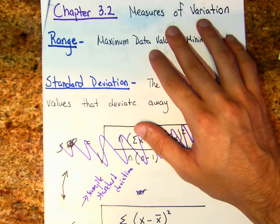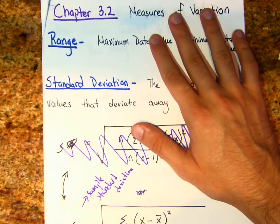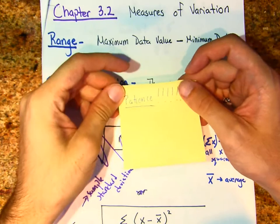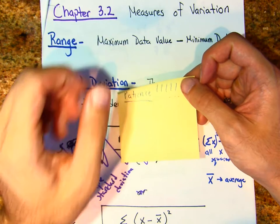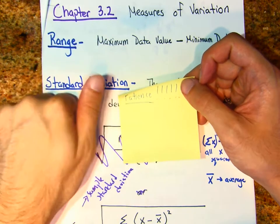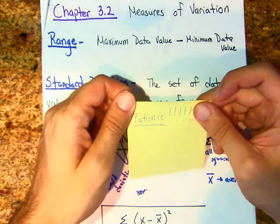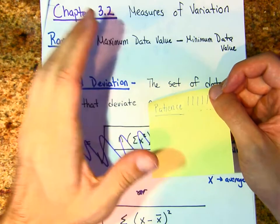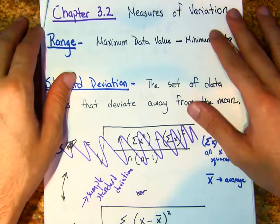Welcome everybody — 3.2 Standard Deviation, let's do it. Chapters one to three were pretty straightforward, nothing too crazy so far, but this is where we'll really have to think. I'm going to have to do a good job teaching this, so I ask you to have patience. This is 3.2: Measures of Variation.